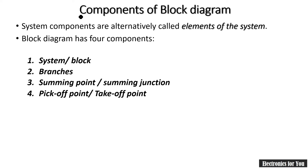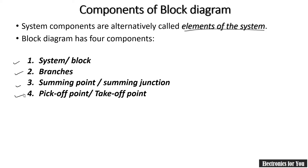The next point is components of block diagram. The system components are also called as elements of the system. There are four different components: the first one is system or block, then branches, then summing point or summing junction, and last one is pick-off point or take-off point. These are the different components that will be a part of our block diagram.